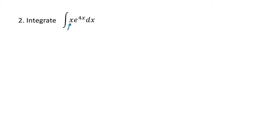Next up, a pretty similar problem. We've got two functions: x and e to the 4x. So one of those needs to be our u, and one of those needs to be our dv.